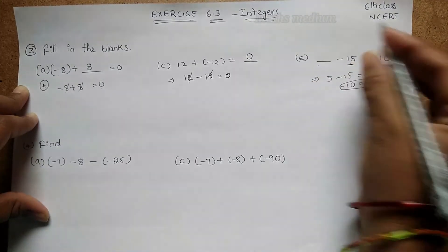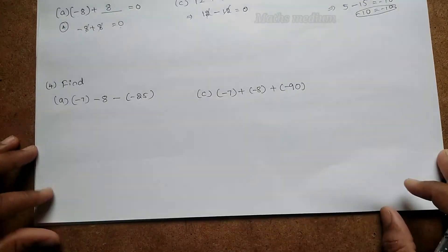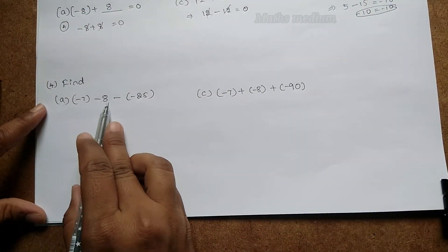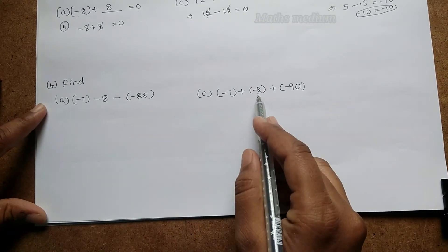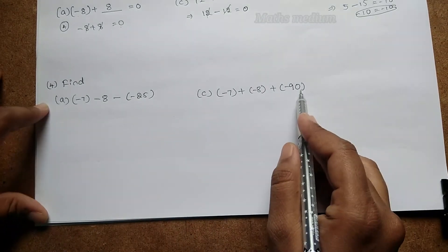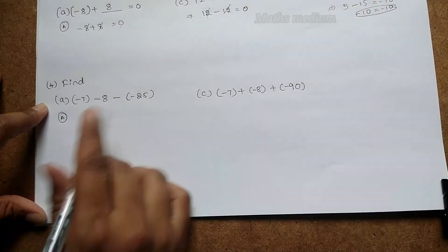Next coming to part (b): Find (a) (-7) - 8 - (-25), and (c) (-7) + (-8) + (-19). So here we have to subtract this.